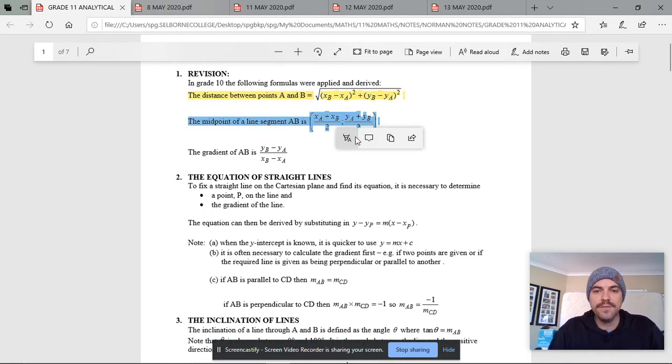The midpoint of a line segment AB is given by that formula over there, also very important. Remember you can either work out the midpoint of a line, or if you are given the midpoint, you can use that same formula to work out what one of the endpoints must have been.